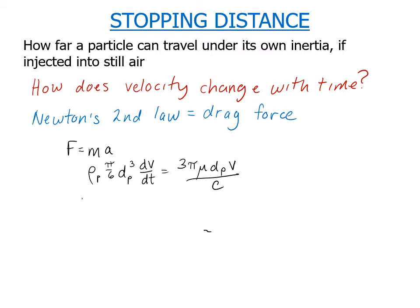Now I can rearrange this and solve for dv dt. It's equal to minus 18 mu divided by rho sub p d sub p squared c, all times v. And this term in the parentheses, I'm going to rewrite as minus 1 over tau. So we have dv dt equals minus 1 over tau times v, where tau is equal to rho sub p d sub p squared c over 18 mu.